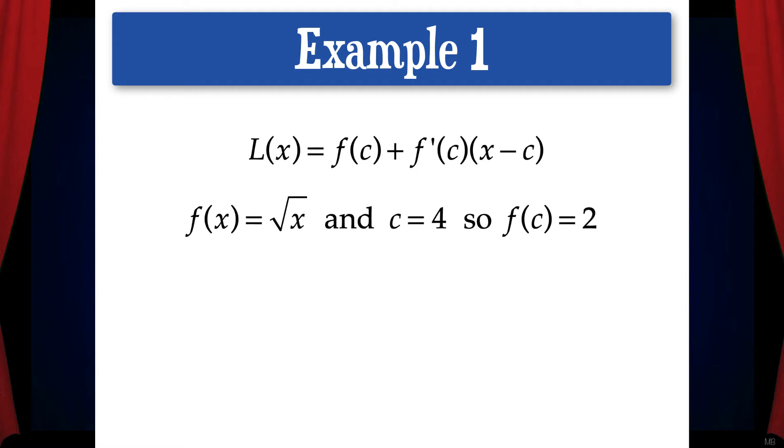So f of c equals 2. F prime of x equals 1 half x to the negative 1 half power, so f prime of c equals 1 fourth. Now we can write L of x: L of x equals 2 plus 1 fourth times the quantity x minus 4.